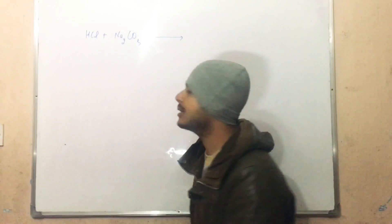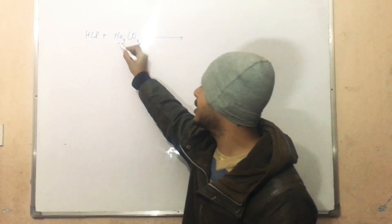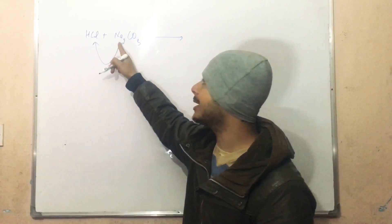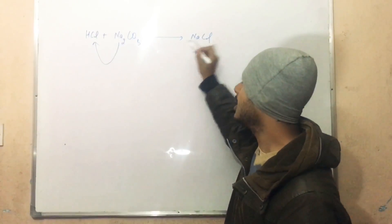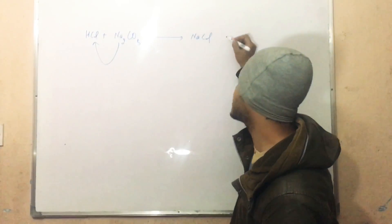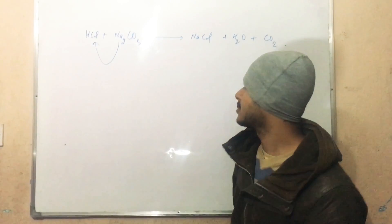So what happens when HCl reacts with sodium carbonate? Sodium carbonate and HCl react to form NaCl. NaCl is the first product.